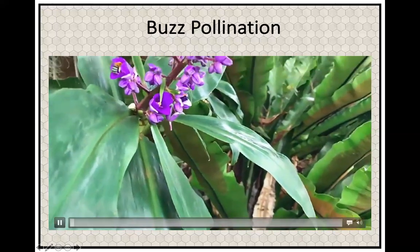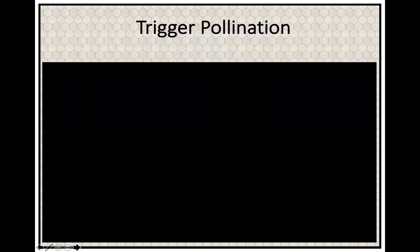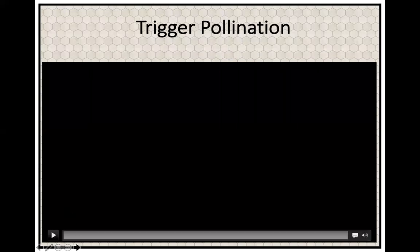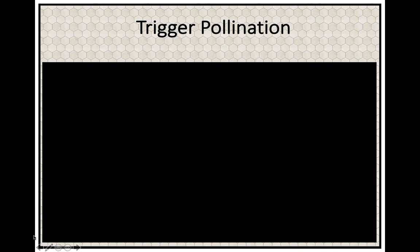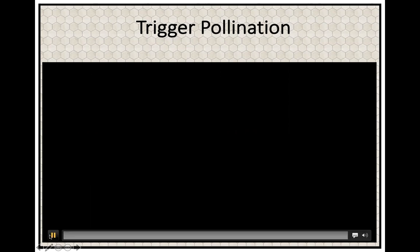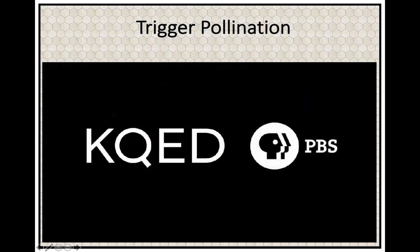We're going to go to the next slide. This next type is called trigger pollination — the pollen is literally hidden inside the flower. This is the leaf-cutter bee, which they've managed to keep in colonies. This will partly answer the question of how you can keep native bees. This is an amazing video and I'll let them explain it themselves.